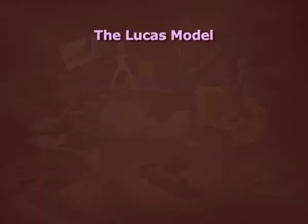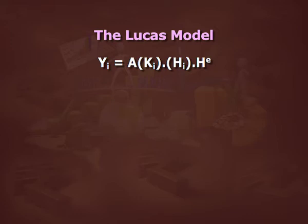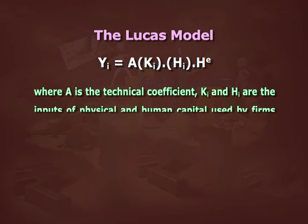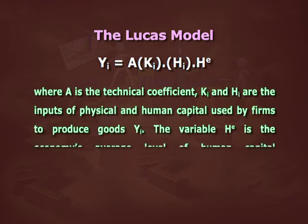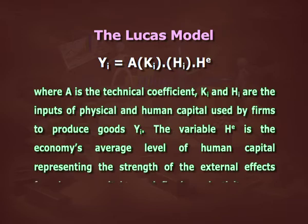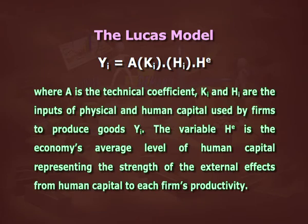It is investment in human capital rather than physical capital that has spill-over effects increasing the level of technology. The output for firm i takes the form: yi = A · ki · hi · h̄, where A is the technical coefficient, ki and hi are the inputs of physical and human capital used by firms to produce output yi, and h̄ (h-exponential) is the economy's average level of human capital, representing the strength of external effects from human capital on each firm's productivity. In the Lucas model, each firm faces constant returns to scale while there are increasing returns for the whole economy.